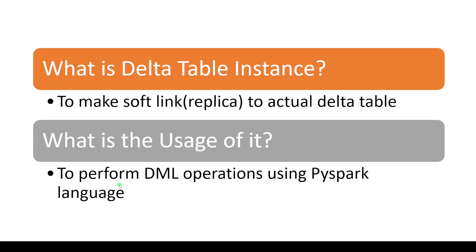Basically, in order to perform any DML operation on a Delta table we are depending on SQL language. Using SQL queries we can select, update, or delete data. But in some projects, developers are not interested in using SQL; as per their project standard they have to follow only PySpark. In that case, to perform any DML operation on a Delta table, using just the table name we cannot do that. So first we have to create a table instance, and then using that instance with PySpark we can perform any DML operations. That is the usage of a table instance.